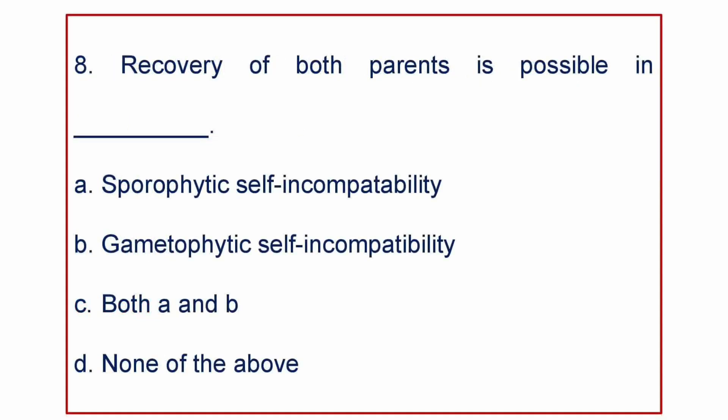Next question. Recovery of both parents is possible in: A. Sporophytic self-incompatibility, B. Gametophytic self-incompatibility, C. Both A and B, or D. None of the above. The answer is sporophytic self-incompatibility.